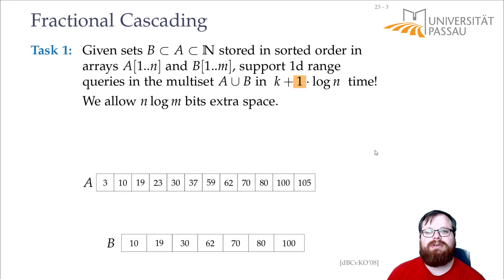For that, we allow that we use n log m bits extra space, exactly this much, not order of it. How could we solve this? n log m bits tells us that we can store something for every element in A. And log m bits that we need to point to a specific element in B, because there are m elements here.